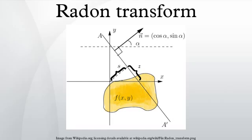If a function f represents an unknown density, then the Radon transform represents the projection data obtained as the output of a tomographic scan. Hence the inverse of the Radon transform can be used to reconstruct the original density from the projection data, and thus it forms the mathematical underpinning for tomographic reconstruction, also known as image reconstruction.